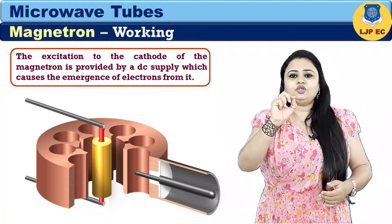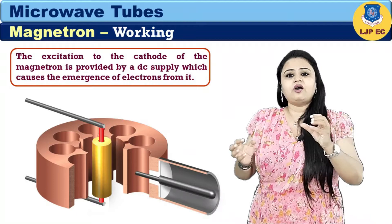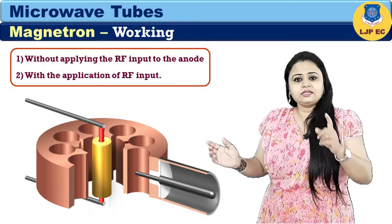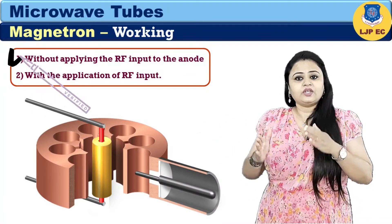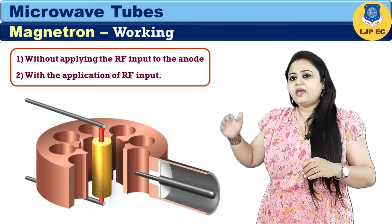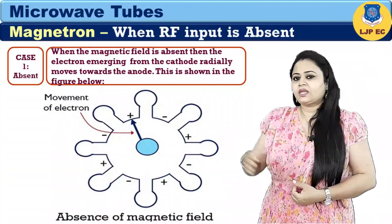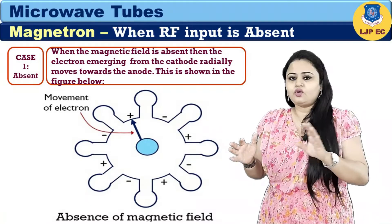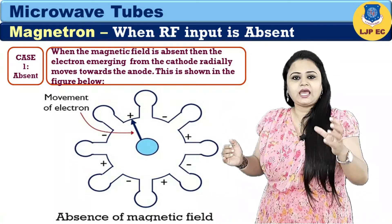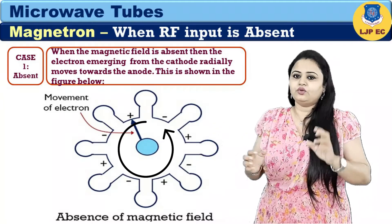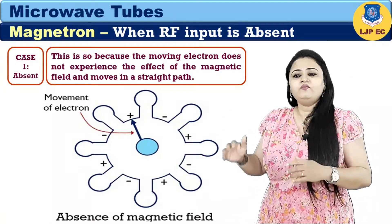The excitation to the cathode of the magnetron is provided by a DC supply, which causes the emergence of electrons from it. We will discuss the working of magnetron under two categories: first, without applying the RF input to the anode, and second, with the application of RF input. When RF input is not present and the magnetic field is zero or absent, electrons emerging from the cathode radially move towards the anode in a straight path, as they do not experience any magnetic field effect.